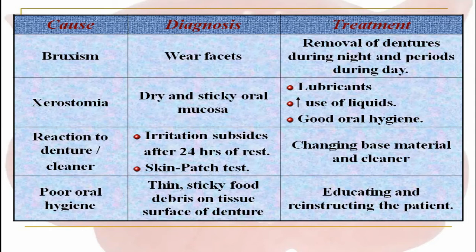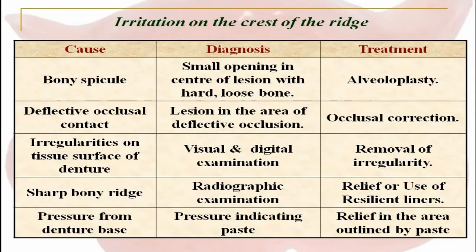Next is irritation on the crest of the ridge. The first cause could be a bone spicule. The diagnosis is a small opening in the center of the lesion with a hard or loose wound in that area. The treatment is alveoloplasty. The next cause for irritation on the crest of the ridge could be deflective occlusal contact. The diagnosis is a lesion in the area of deflective occlusion, and the treatment is occlusal correction.